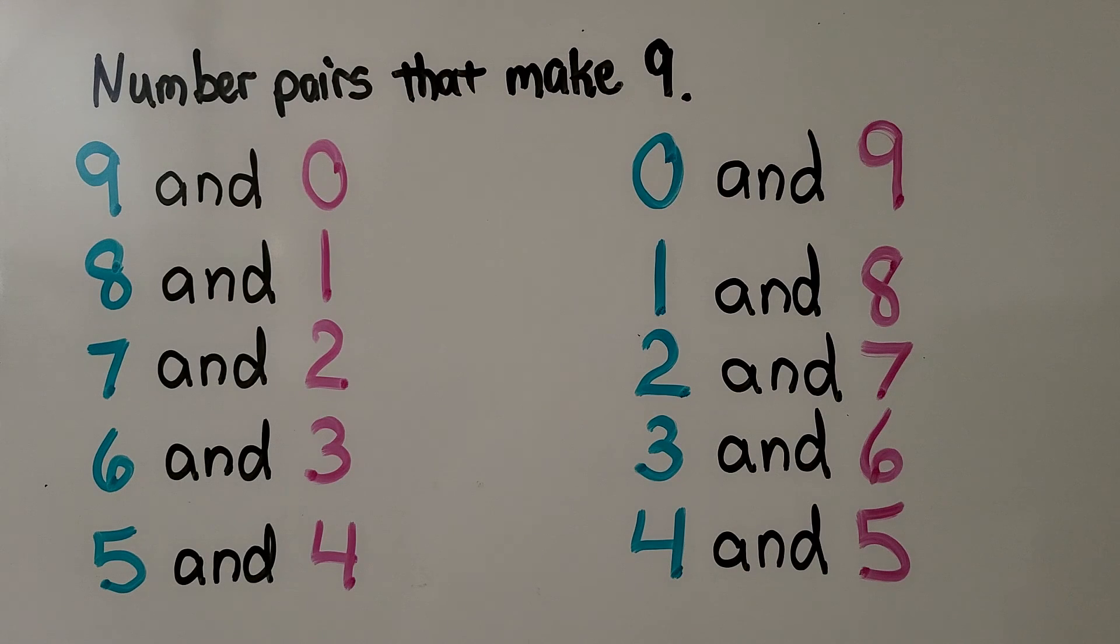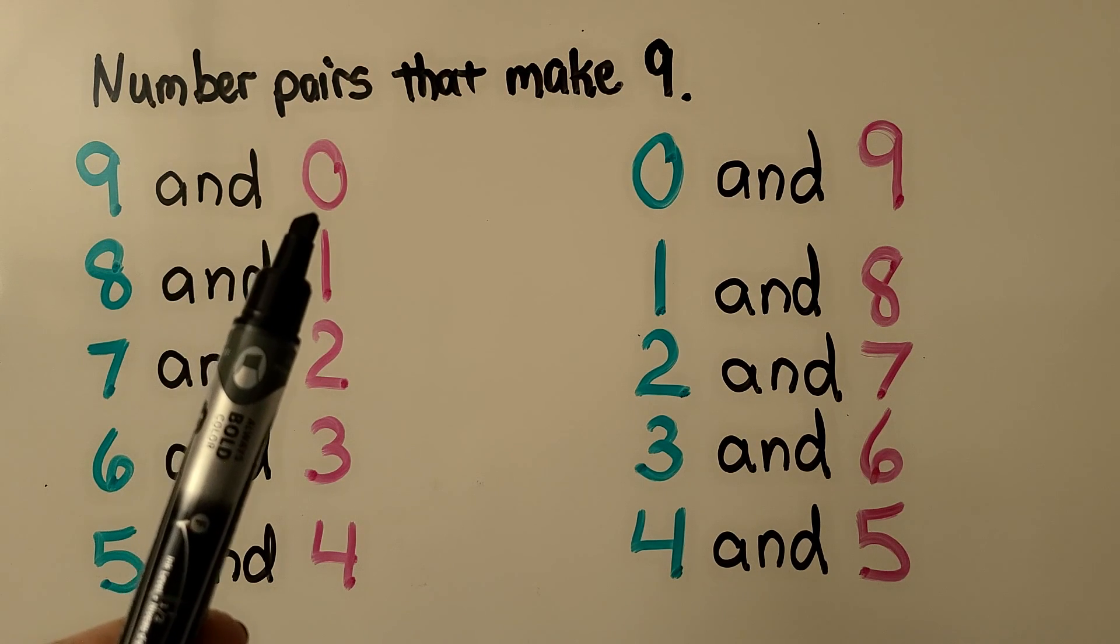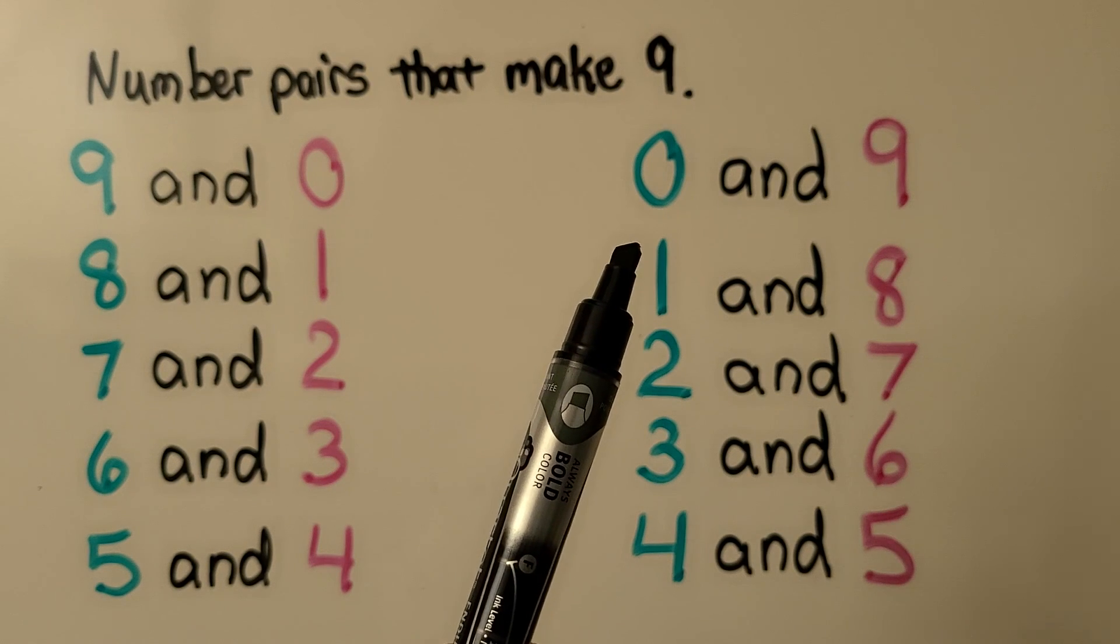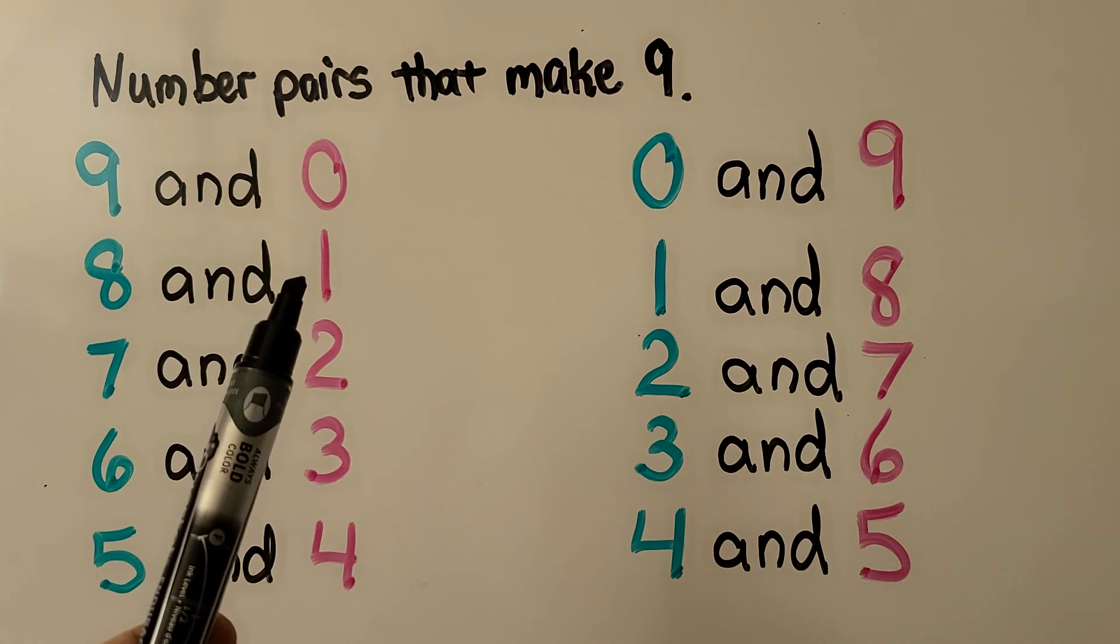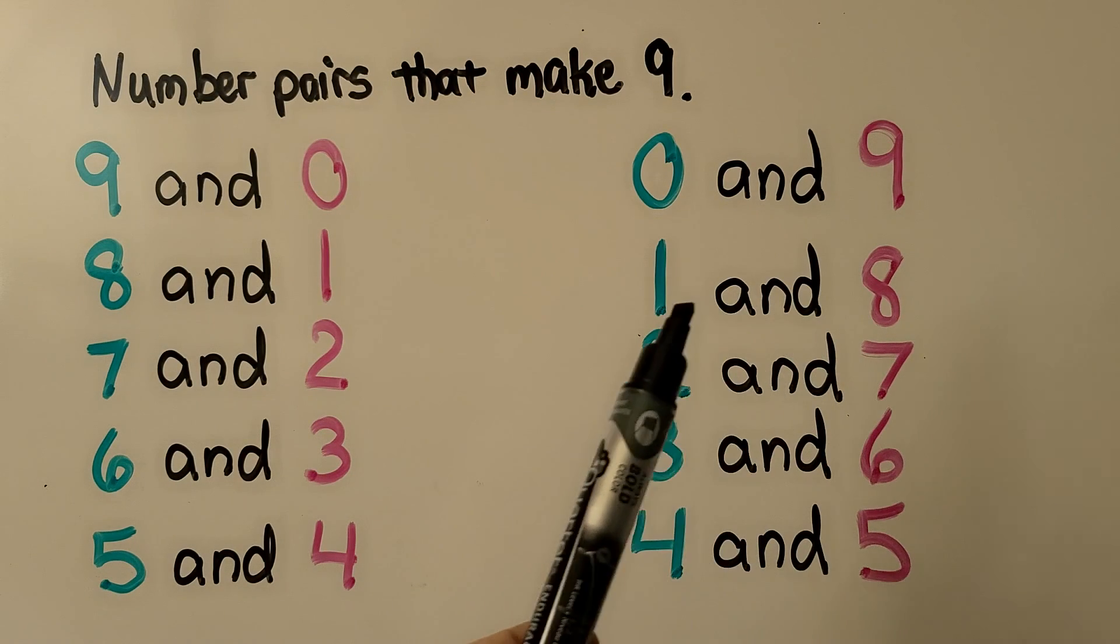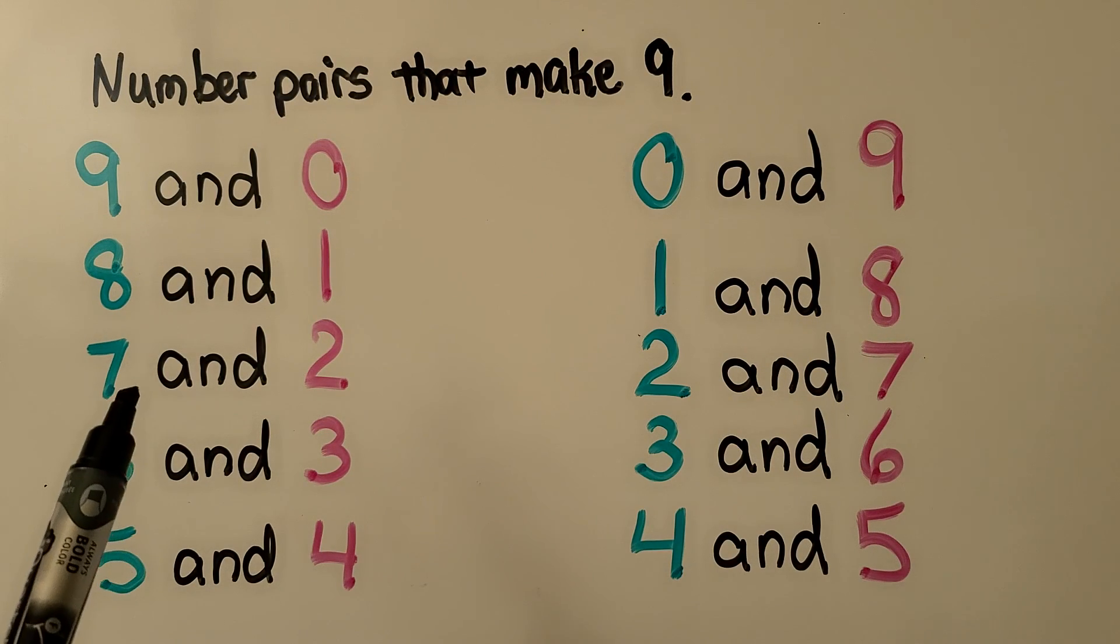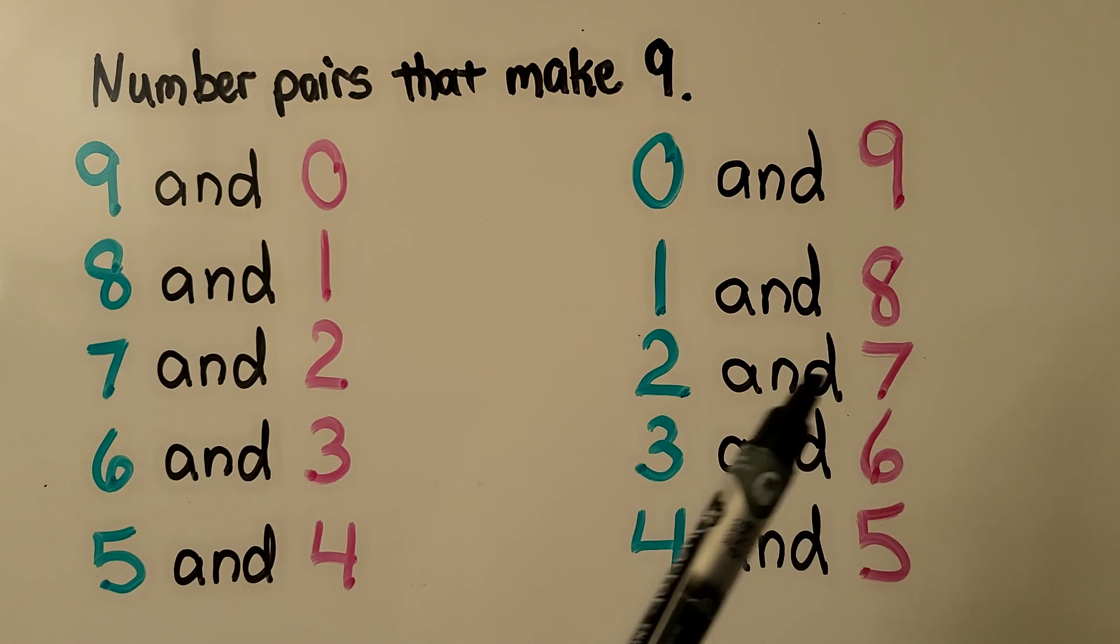Here are number pairs that make 9. If we use two different color counters, these are the number pairs that would make 9. We could use 9 blue ones and 0 pink ones, or we could use 0 blue ones and 9 pink ones. We could use 8 blue ones and 1 pink one, or 1 blue and 8 pink ones. We could use 7 blue and 2 pink, or 2 blue and 7 pink.